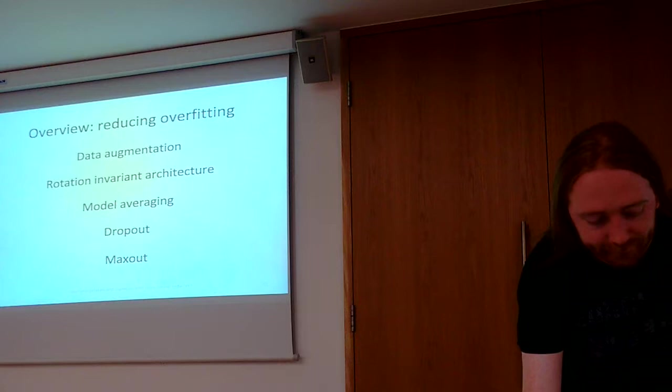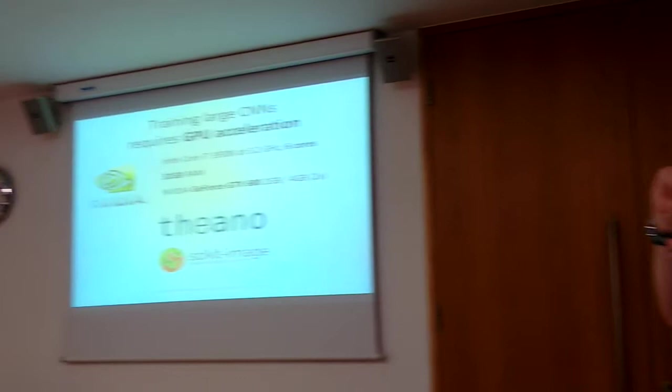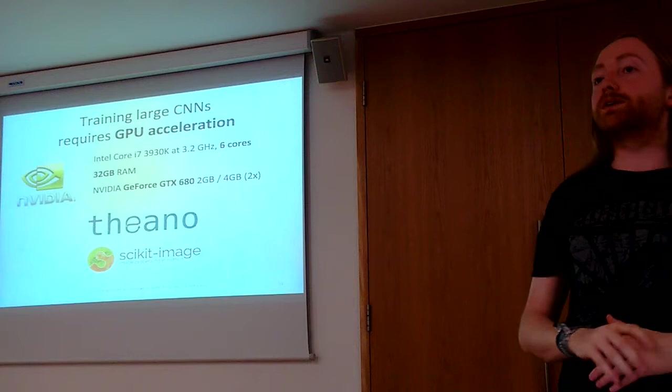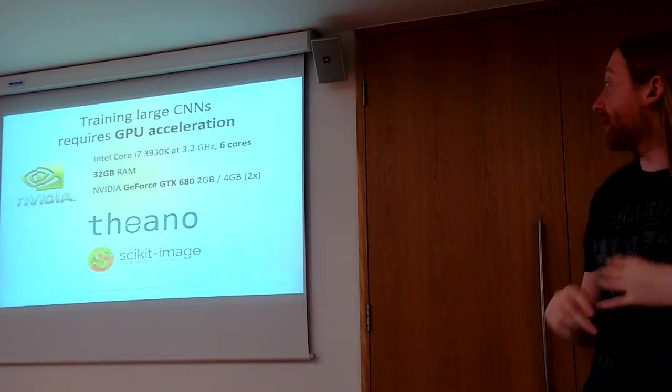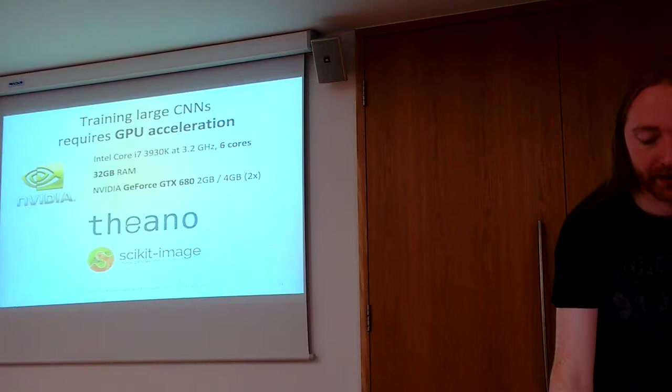Training these things requires GPU acceleration. So this is the hardware that I had access to in my lab at the time - we had a bunch of GTX 680s. I used the Theano library to implement all of these networks, and then for the data augmentation and preprocessing I used a library called scikit-image, which is really nice. And this allowed me to do the preprocessing and data augmentation in real time. So during training I would generate fresh batches of training data with random perturbations in real time, which basically allowed me to give the network new data constantly. So it would never basically see the exact same image twice, which helped a lot against overfitting.